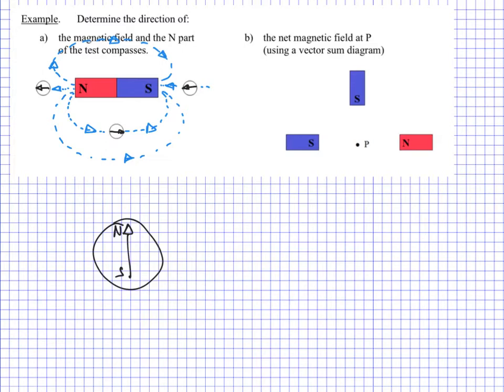Next example, example B - here we're asked to look at the magnetic field vectors and add them together, then give a net vector sum description of position P in the middle of these three magnets. I should also mention that these magnets are only representing half of a magnet - there's no such thing as a monopole. So this would be half of a magnet; in other words, there would be a south pole over here. Same with the blue south poles - there would be a north over here and a north over here. Either way, we're only focusing on one end of the bar magnet.